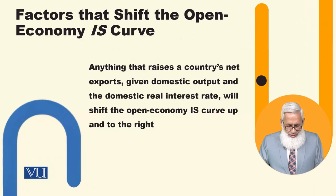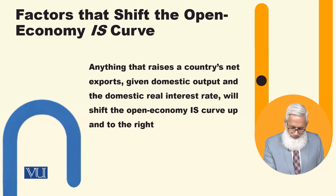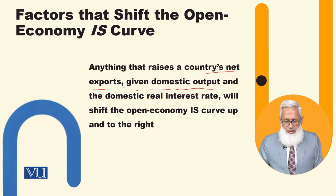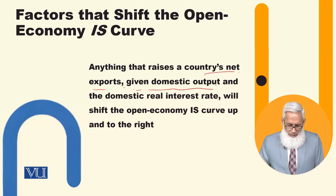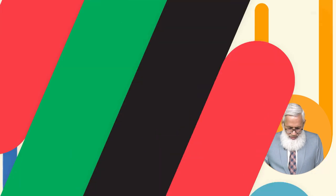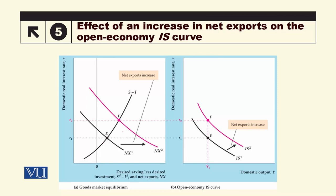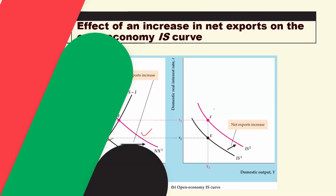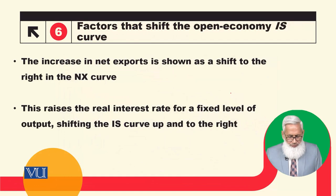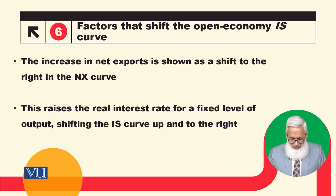Factors that shift the open economy IS curve: anything that raises a country's net exports, given that domestic output — GDP — is constant and the domestic real interest rate is constant, will shift the open economy IS curve up and to the right. This represents a higher real interest rate for a fixed level of output.